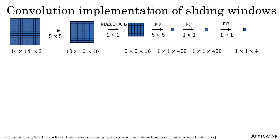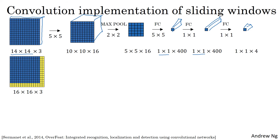To simplify the drawing, 14 by 14 by 3, 10 by 10 by 16, and so on are technically volumes, but I'm going to draw just the front face of these volumes and drop the 3D component. Now, let's say your ConvNet inputs 14 by 14 by 3 images and your test set image is 16 by 16 by 3, with an added yellow stripe on the border.